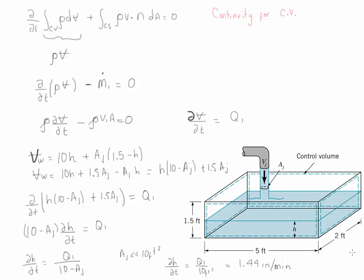The key of this problem is to understand that this is an unsteady problem because one of the quantities related to volume changes as a function of time. What you need to do is establish the volume of the fluid you are evaluating as a function of a variable that changes with time — in this case, h. You write the volume as a function of h, substitute it into the equation equating dV/dt to the flow rate, and then determine dh/dt from the given information. For this particular case, dh/dt is positive because h increases as a function of time.